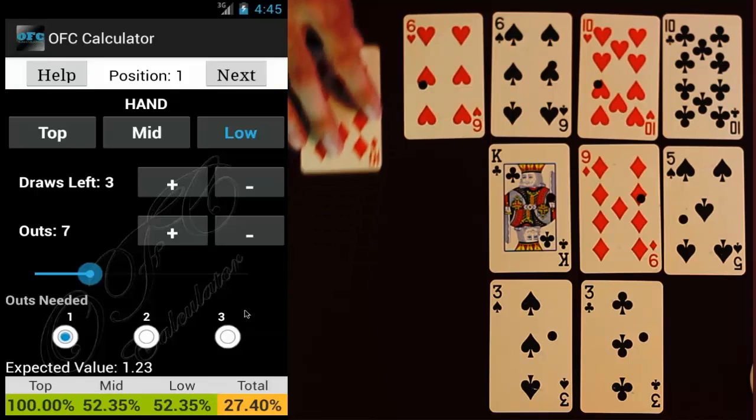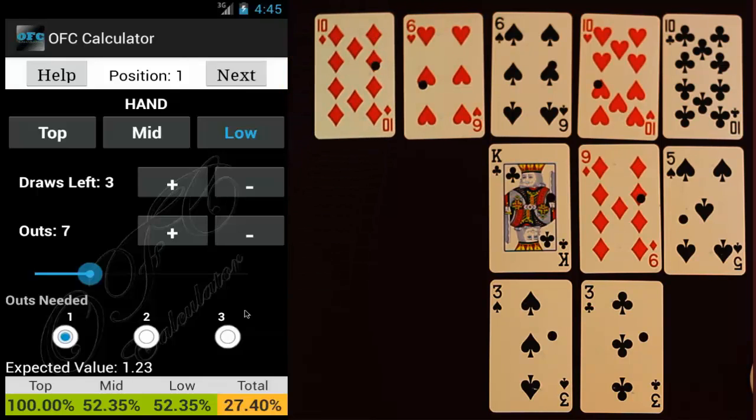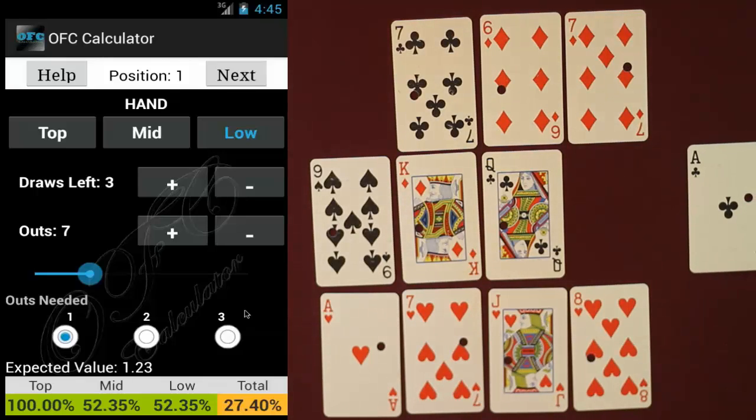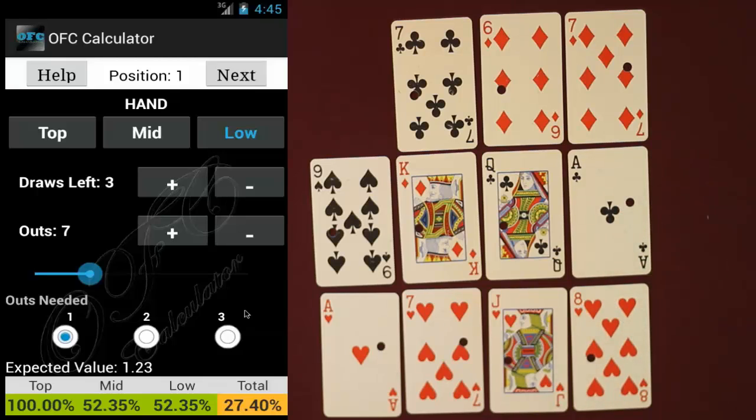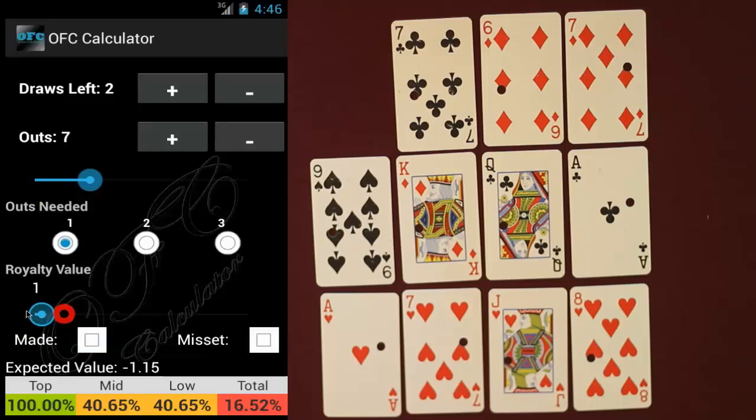Now our opponent draws the ten of diamonds and makes a full house on the bottom. We then draw the ace of clubs. Let's take a look at a couple scenarios. First let's look at putting it in the middle. We're going to decrease our number of draws by one. And also on the low hand we're going to scroll down to royalty value and change it to zero. Because now we get no royalty points even if we make our flush. We're also going to increase the number of outs by two to nine and click the miss set checkbox because now we are technically miss set on our low hand unless we hit a heart or an ace. As you can see our expected value dropped dramatically down to negative two point seven seven.